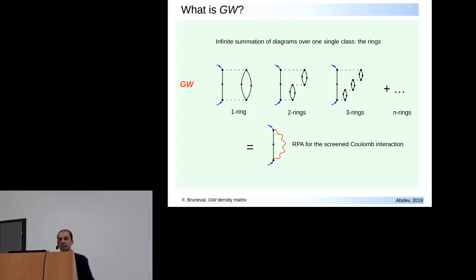In GW you have an infinite summation over the non-interacting electron-hole pairs. If you look carefully at these diagrams, you see that you can sum up all these diagrams and include them in this wiggly line which is the W of GW. This is the screened Coulomb interaction.